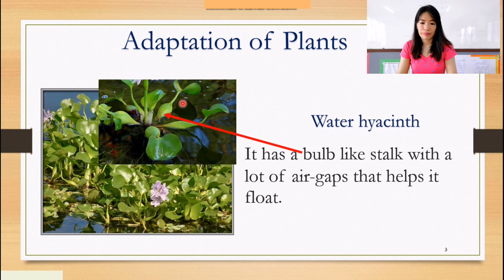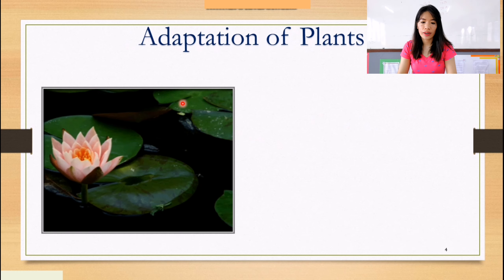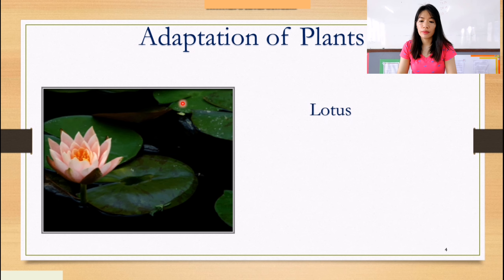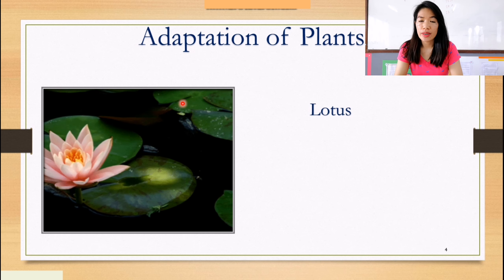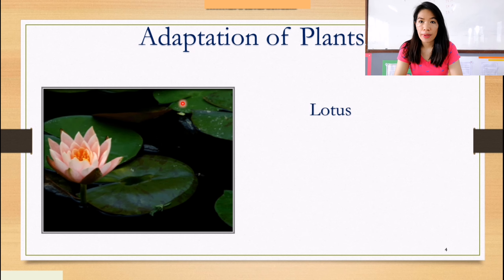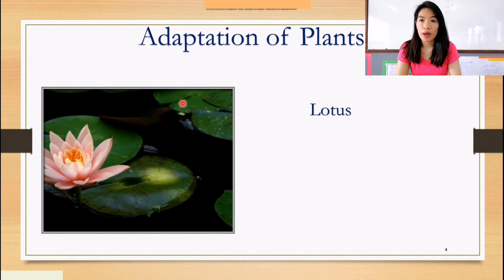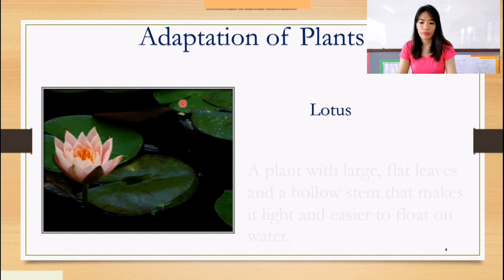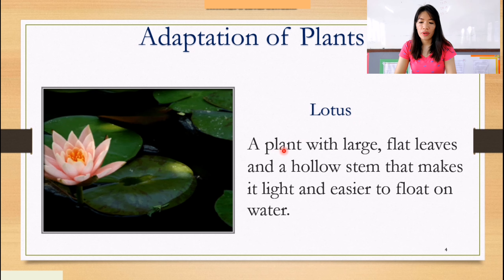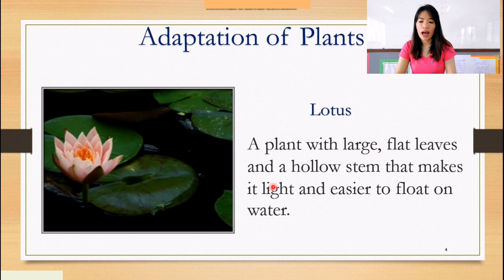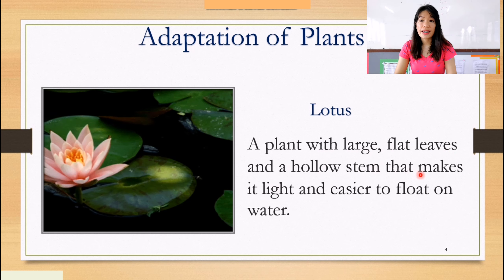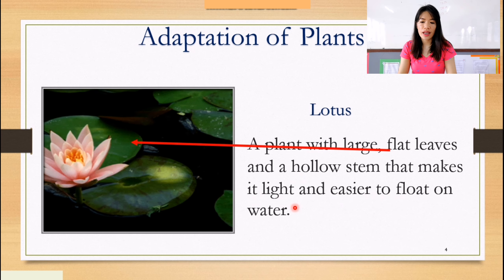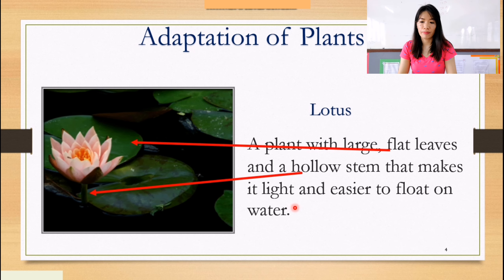By the way, the plants that live and grow in water are called aquatic plants. We have the water mimosa, water hyacinth, and the lotus. How does the lotus adapt to its environment? Lotus is a plant with large flat leaves and a hollow stem that makes it light and easier to float on water. That is the flat leaves and that is the hollow stem.